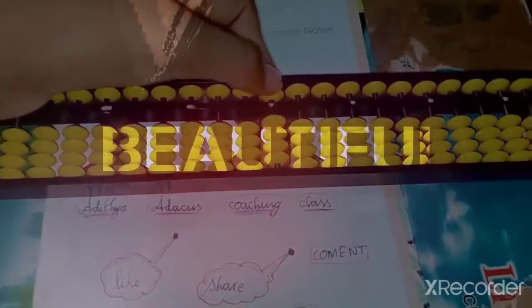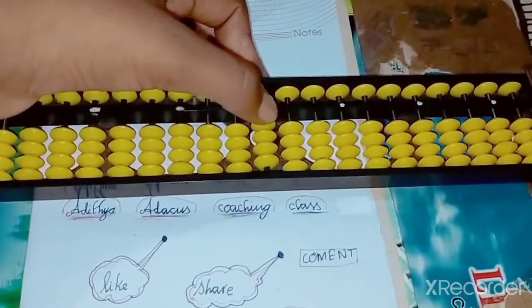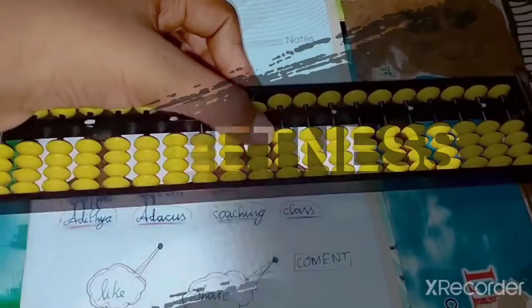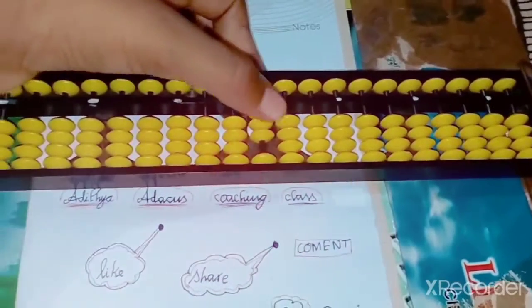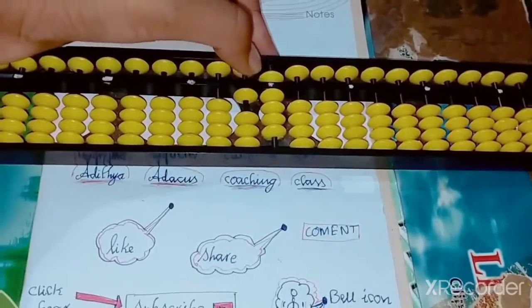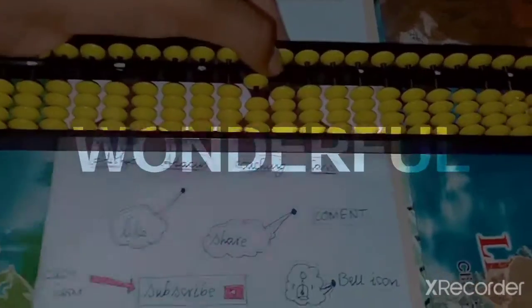Now we have to do add five means plus upper bead one and lower bead minus four. Add six. Add seven. Add eight. Add nine. Add ten means you have ten and minus ten. I told you before once, tens.